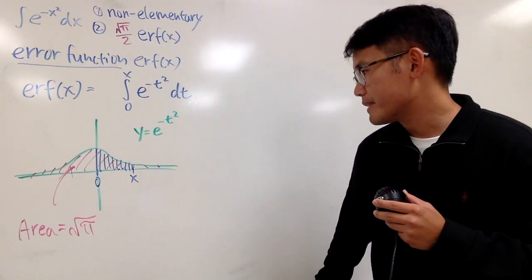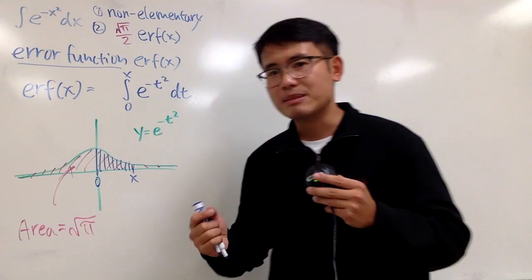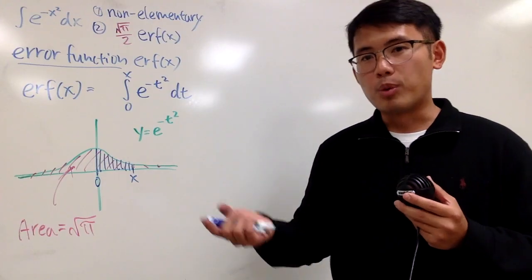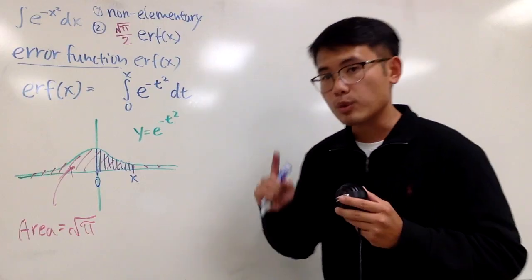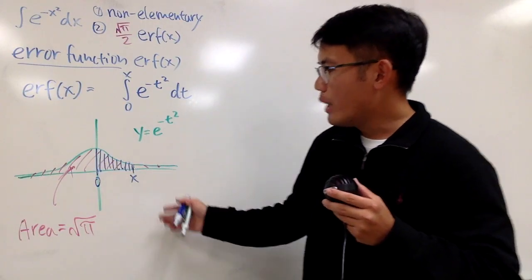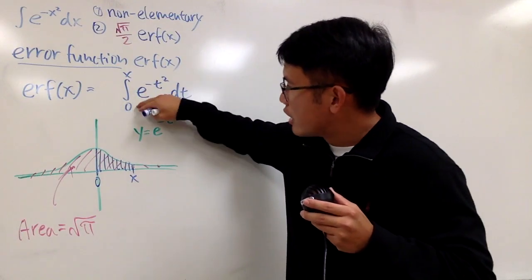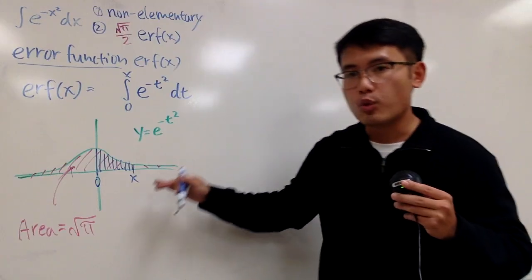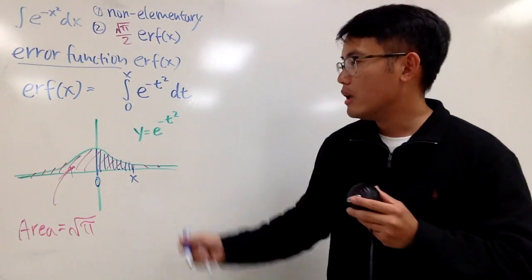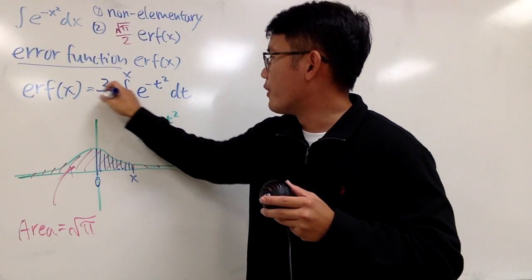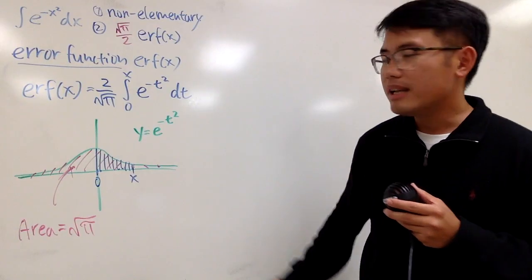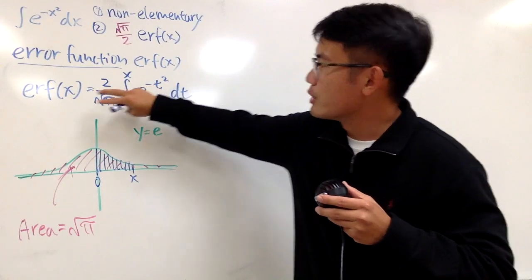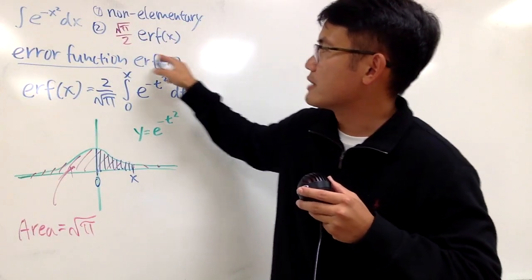In statistics, what we want is the whole area under the curve to be 1, because of what we call the probability density function — the whole probability is 100%. So instead of the whole area being square root of pi, since I started at 0, if x goes to positive infinity, this right portion is just square root of pi over 2. But I want 1, so I multiply by 2 over square root of pi. The area function is defined to be this, and if you want to integrate this, you multiply by the reciprocal, namely square root of pi over 2 times erf of x.